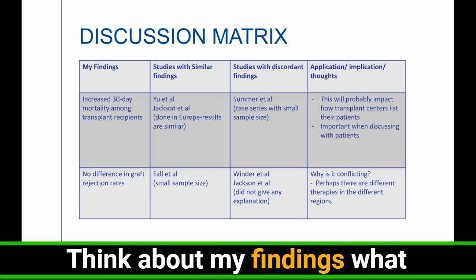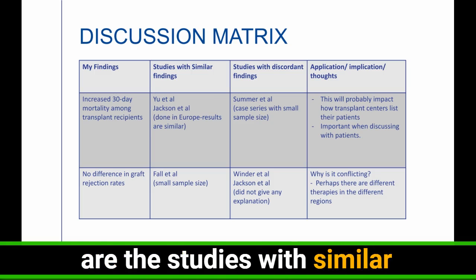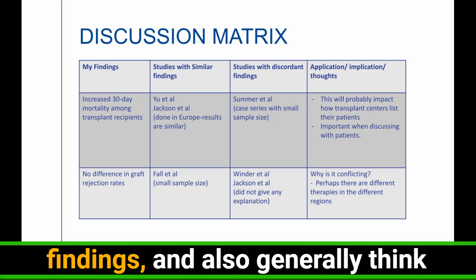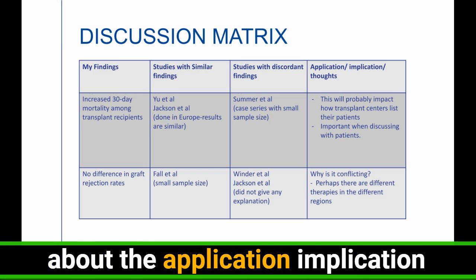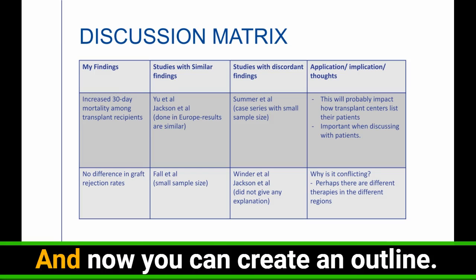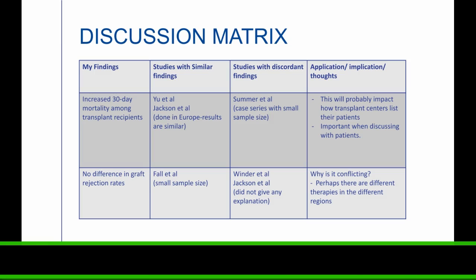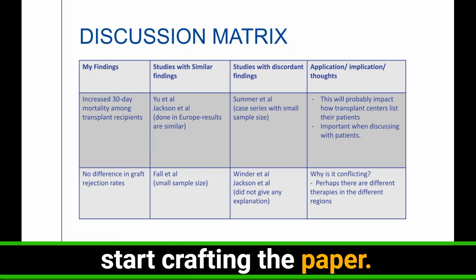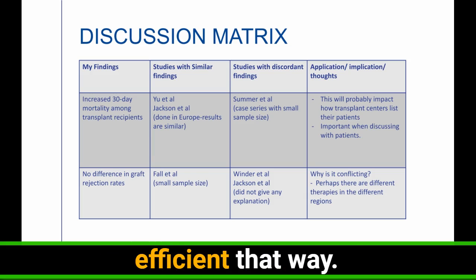Think about my findings. What are the studies with similar findings in the second column? Maybe studies with discordant findings. And also generally think about the application implication and write about your thoughts. And now you can create an outline. Once everybody's happy with that, then you can start crafting the paper. It's really much more efficient that way.